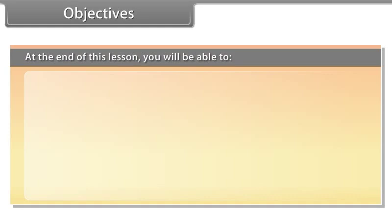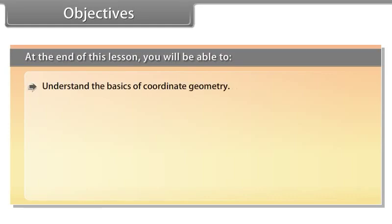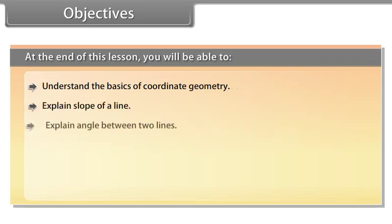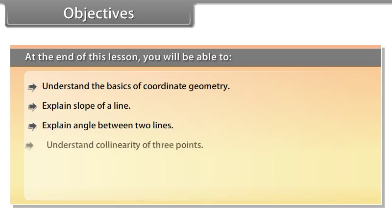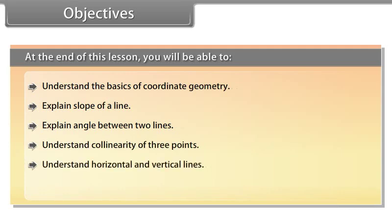At the end of this lesson, you will be able to: understand the basics of coordinate geometry, explain slope of a line, explain the angle between two lines, understand collinearity of three points, understand horizontal and vertical lines, and write point-slope form and two-point form.